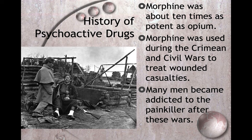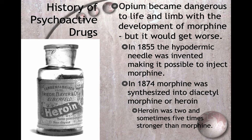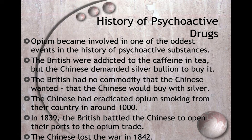Morphine was about ten times as potent as opium and was used during the Crimean and Civil Wars to treat wounded casualties. Many men became addicted to the painkiller after these wars. In 1855, the hypodermic needle was invented, making it possible to inject morphine. In 1874, morphine was synthesized into diacetylmorphine, or heroin. Heroin was two and sometimes five times stronger than morphine. So we have morphine that's ten times stronger than opium, and heroin that's two to five times stronger than morphine.